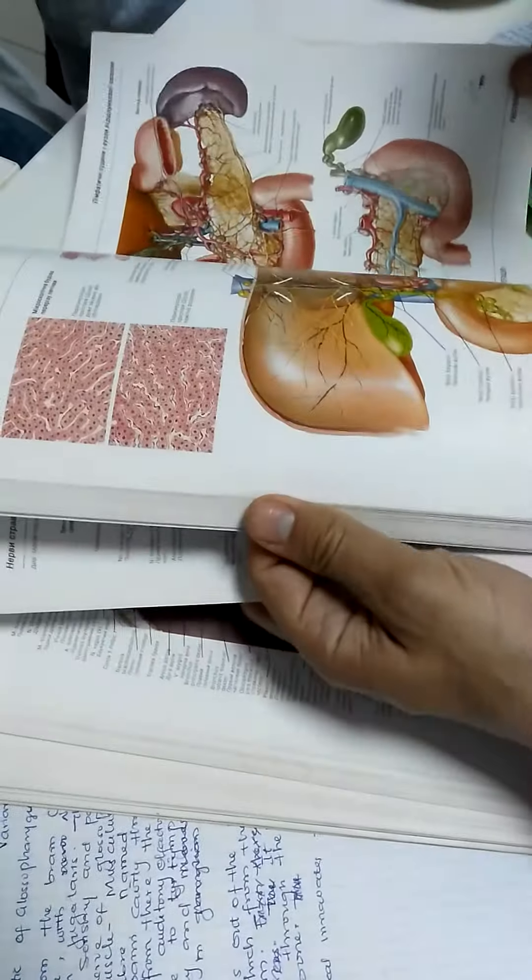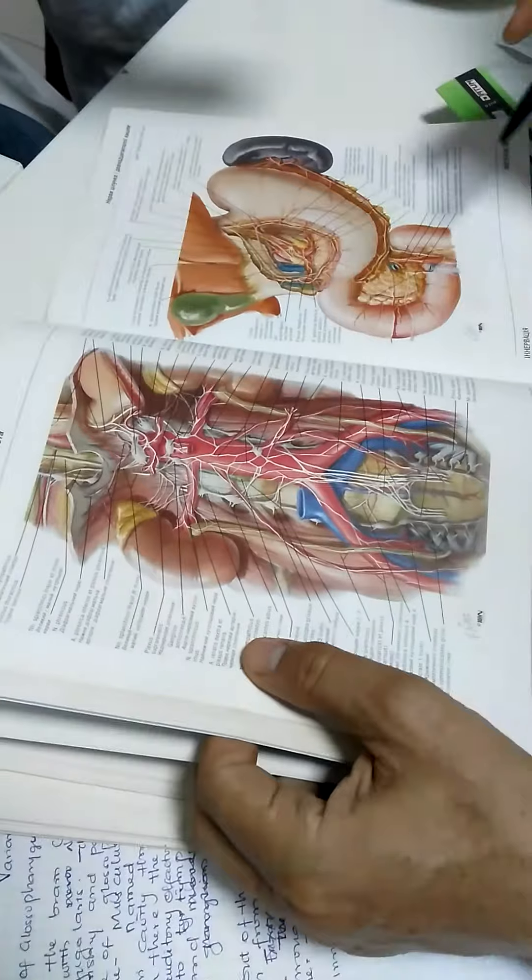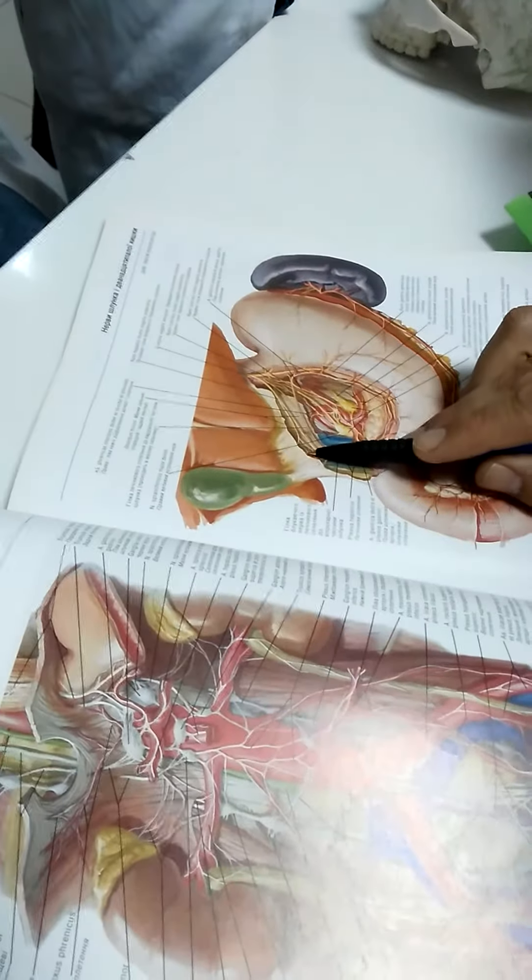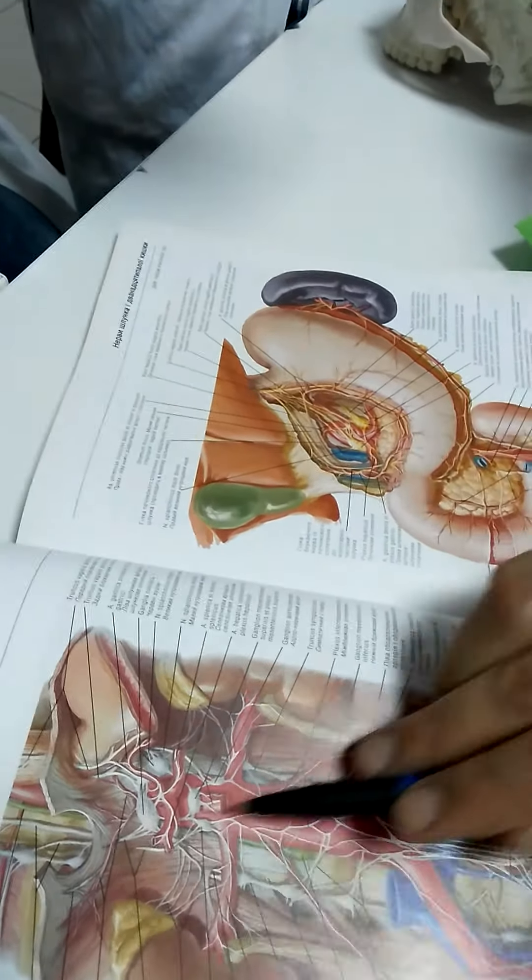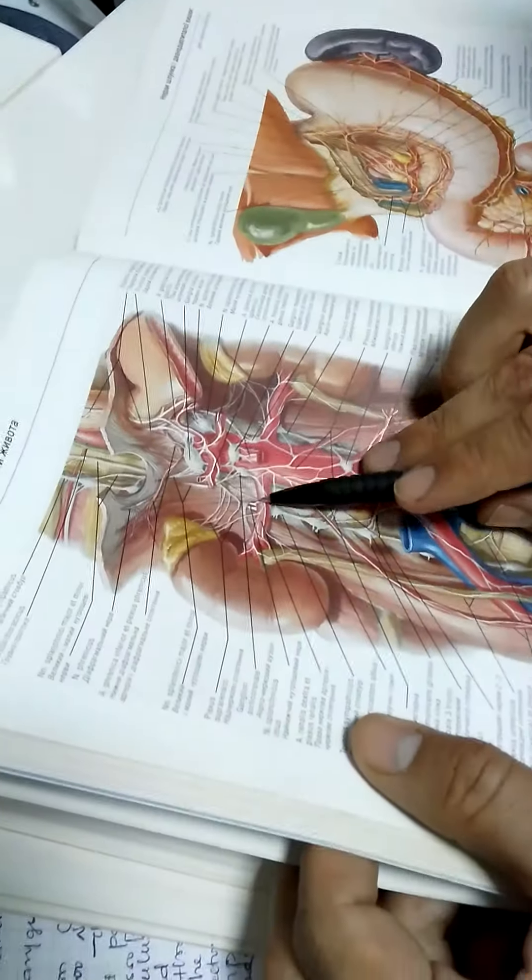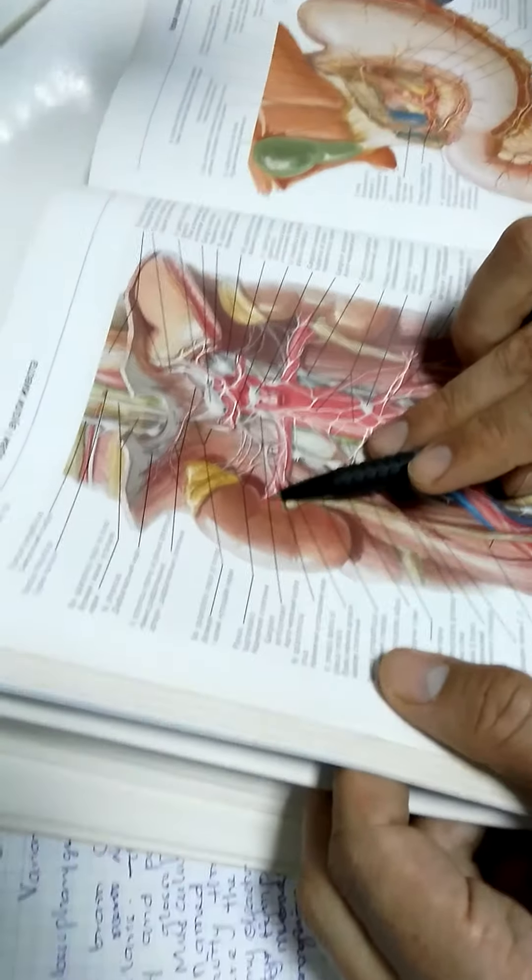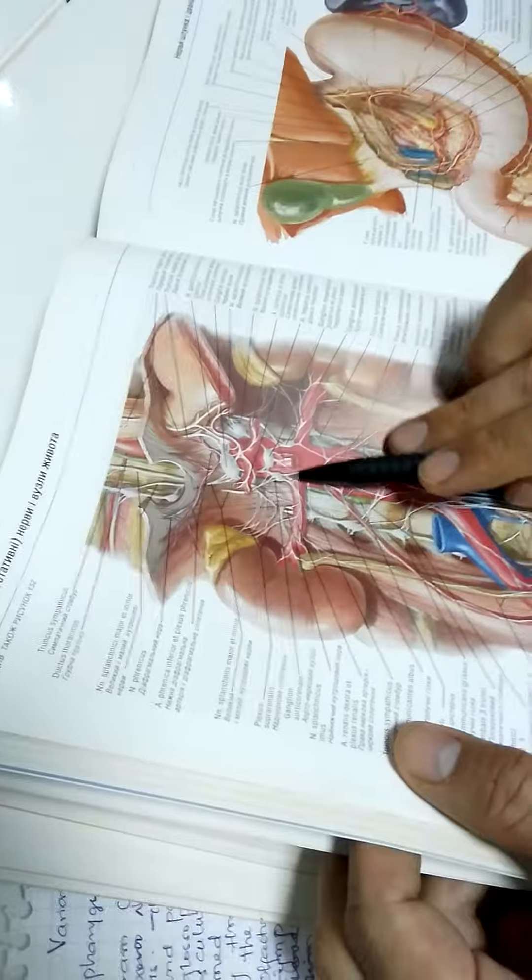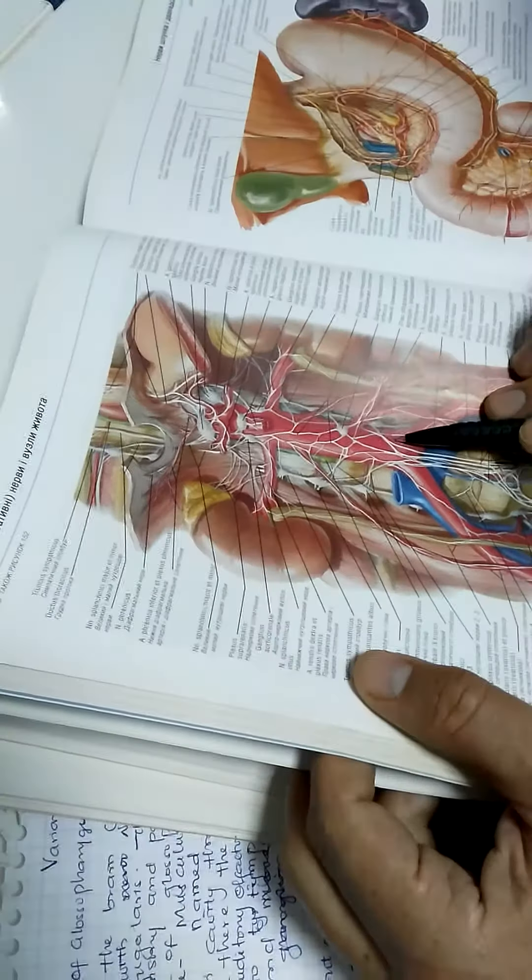Then the liver, same. You see, hepatic artery keeps the plexus sympatheticus and parasympathicus. Then renal artery. You see, the kidney receives sympathetic and parasympathetic nerve, and the continuation of plexus and parasympathetic nerve.